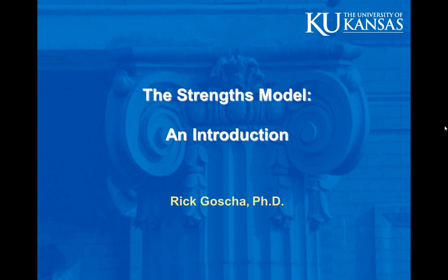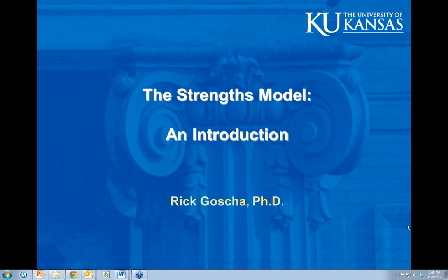I'm Rick Gosch. I'm the director of the Center for Mental Health Research and Innovation here at the University of Kansas, and I've been here since 1999. I'm also the co-author of the book The Strengths Model: Recovery-Oriented Approach to Mental Health Services, now in its third edition. Prior to coming to the university, I've done most kinds of positions within a mental health center, where I've been able to actually apply this model, use it, interact with clients, and get that first-hand ability to see how it makes a difference with people.